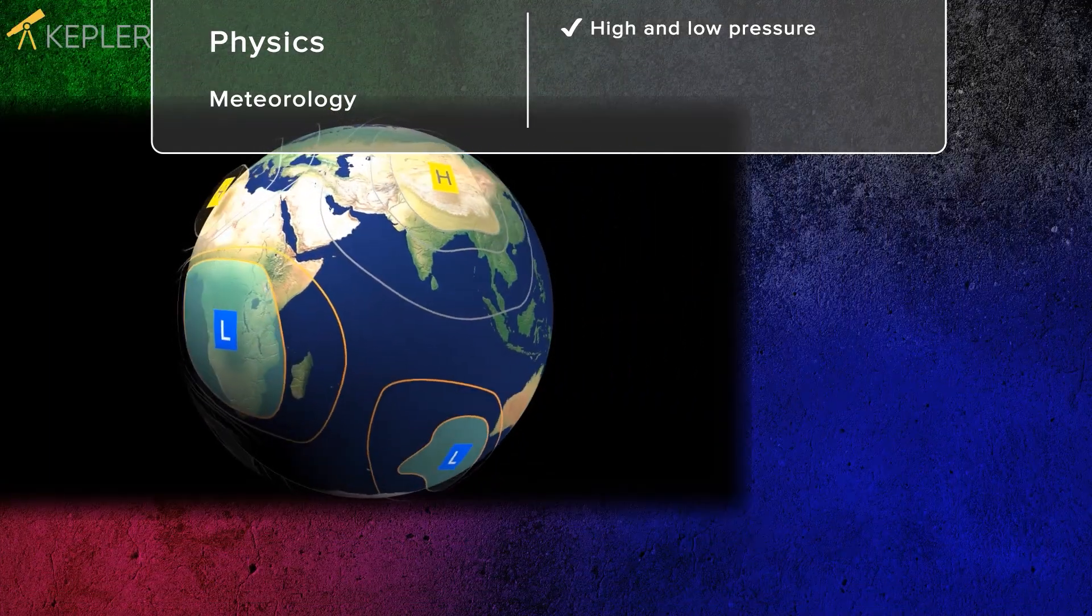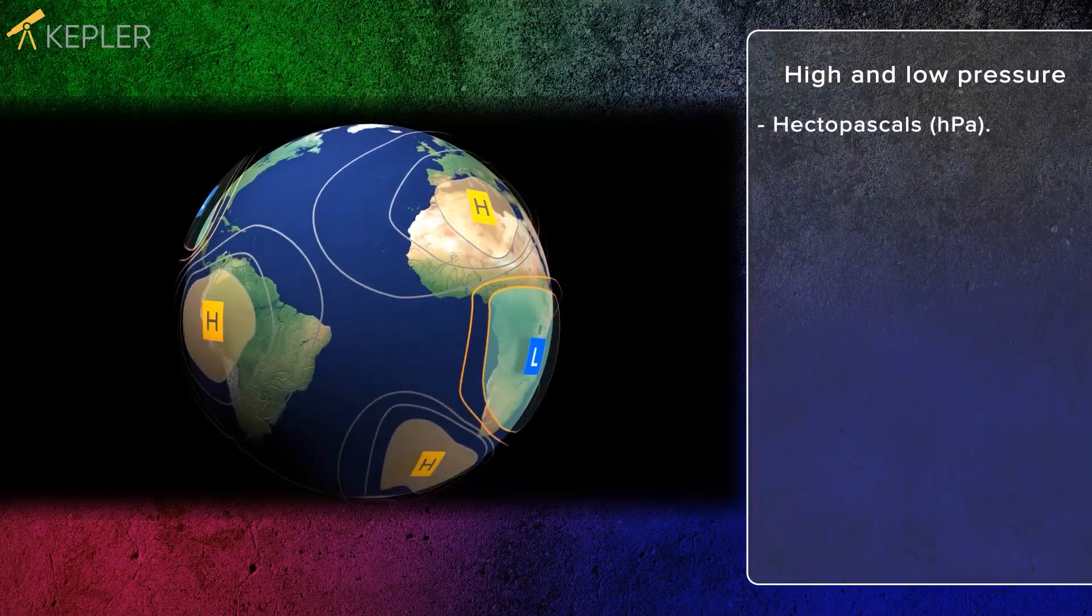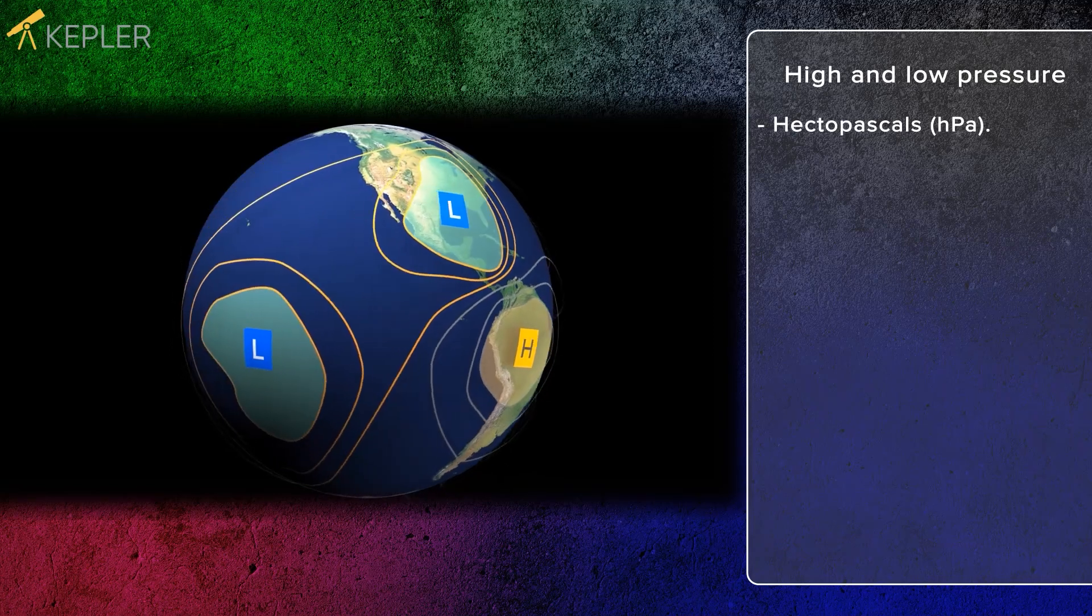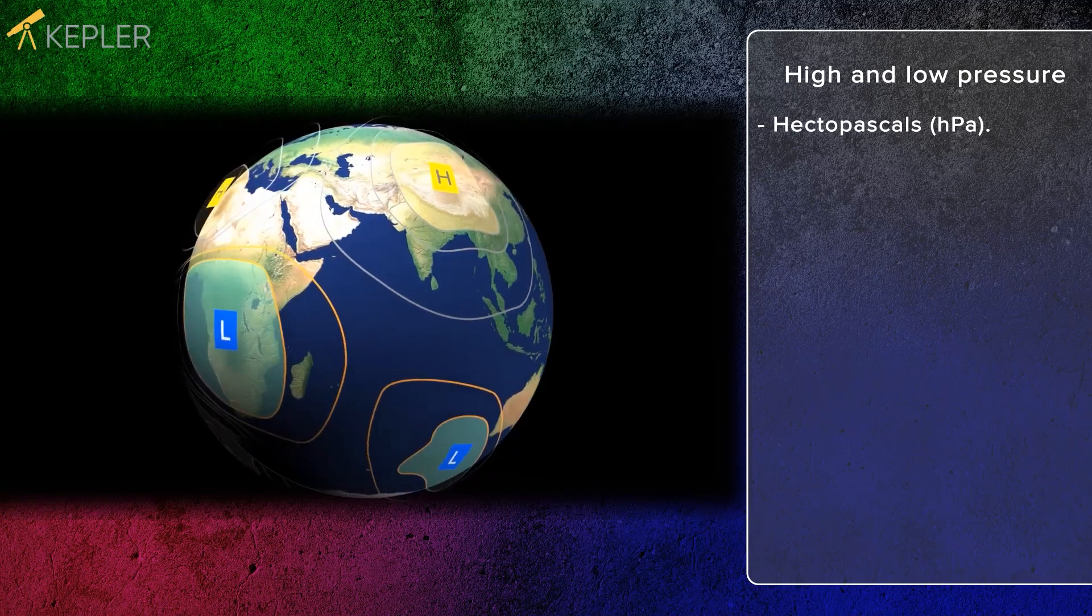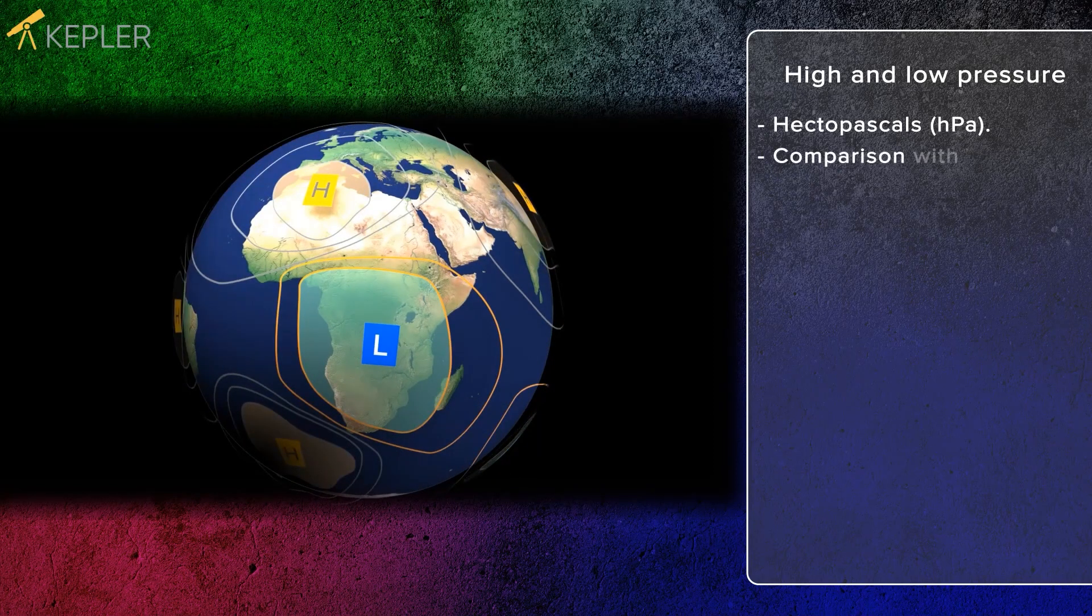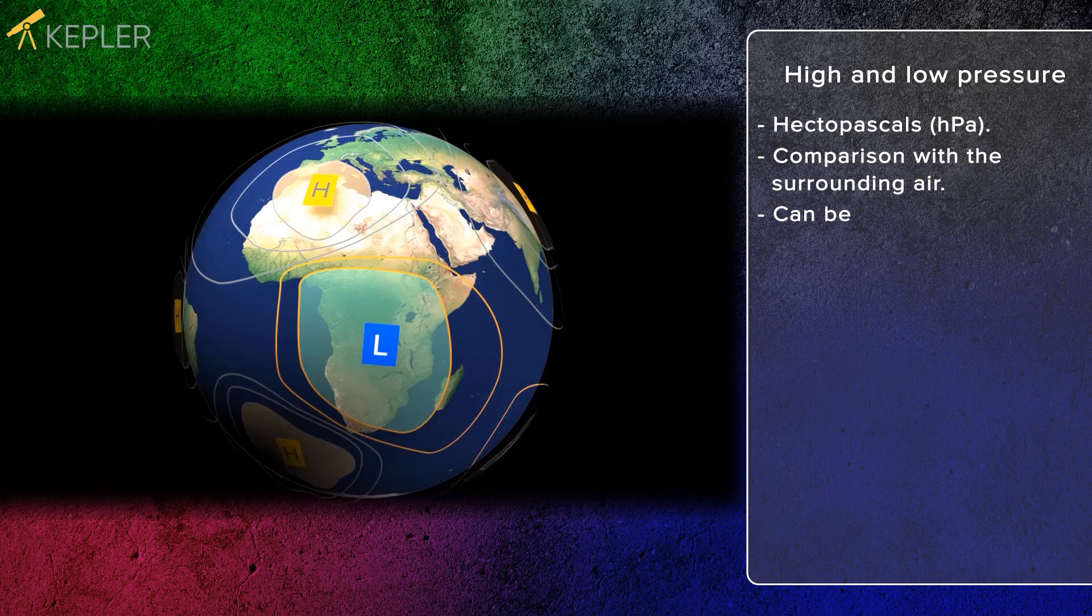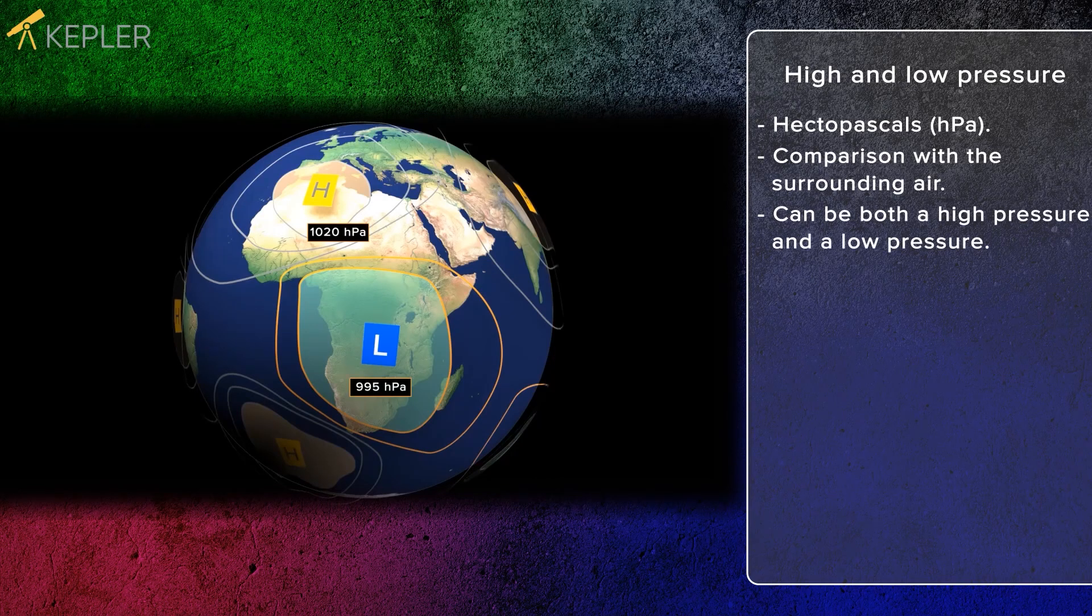Air pressure is measured in hectopascals, HPA. There is no specific determined value that says whether the pressure is high or low. It is merely in comparison with the surrounding air. This means that a given air pressure can be both a high pressure and a low pressure depending on the ambient air pressure.